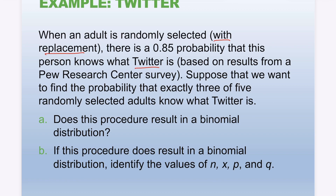Does this procedure result in a binomial distribution? If it does, identify the values n, x, p, and q. So x is the number of people who know what Twitter is out of a group of five.